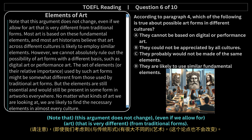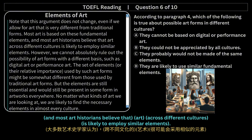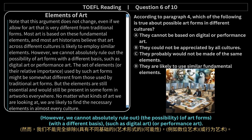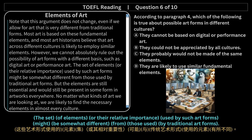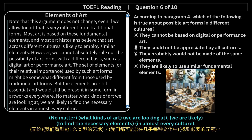Note that this argument does not change even if we allow for art that is very different from traditional forms. Most art is based on these fundamental elements, and most art historians believe that art across different cultures is likely to employ similar elements. However, we cannot absolutely rule out the possibility of art forms with a different basis, such as digital art or performance art. The set of elements, or their relative importance, used by such art forms might be somewhat different. But the elements are still essential and would still be present in some form in artworks everywhere. No matter what kinds of art we are looking at, we are likely to find the necessary elements in almost every culture.